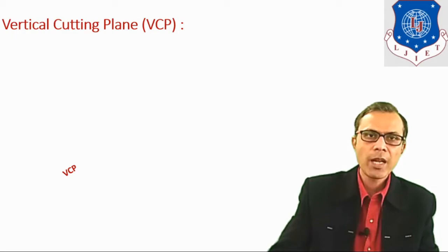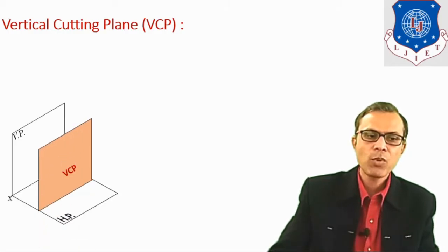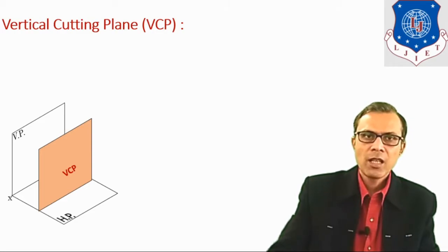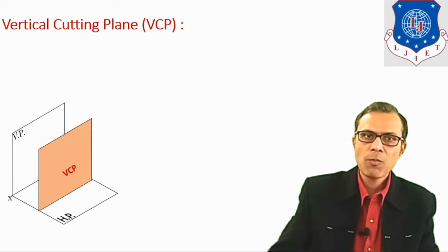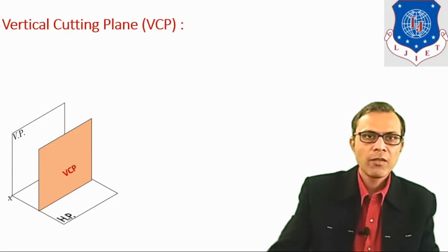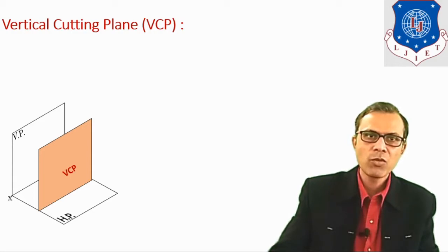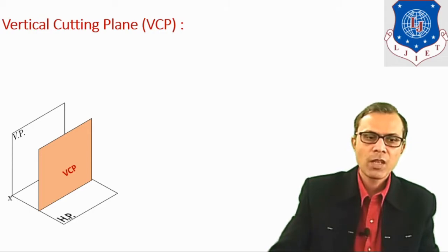The next type of cutting plane is the vertical cutting plane, in short form written as VCP. Its position is parallel to BP and perpendicular to HP. When we cut any object with this type of cutting plane, the true shape of the section will appear in the front view, so the front view itself is the sectional front view and it is the true shape of the sectional view.